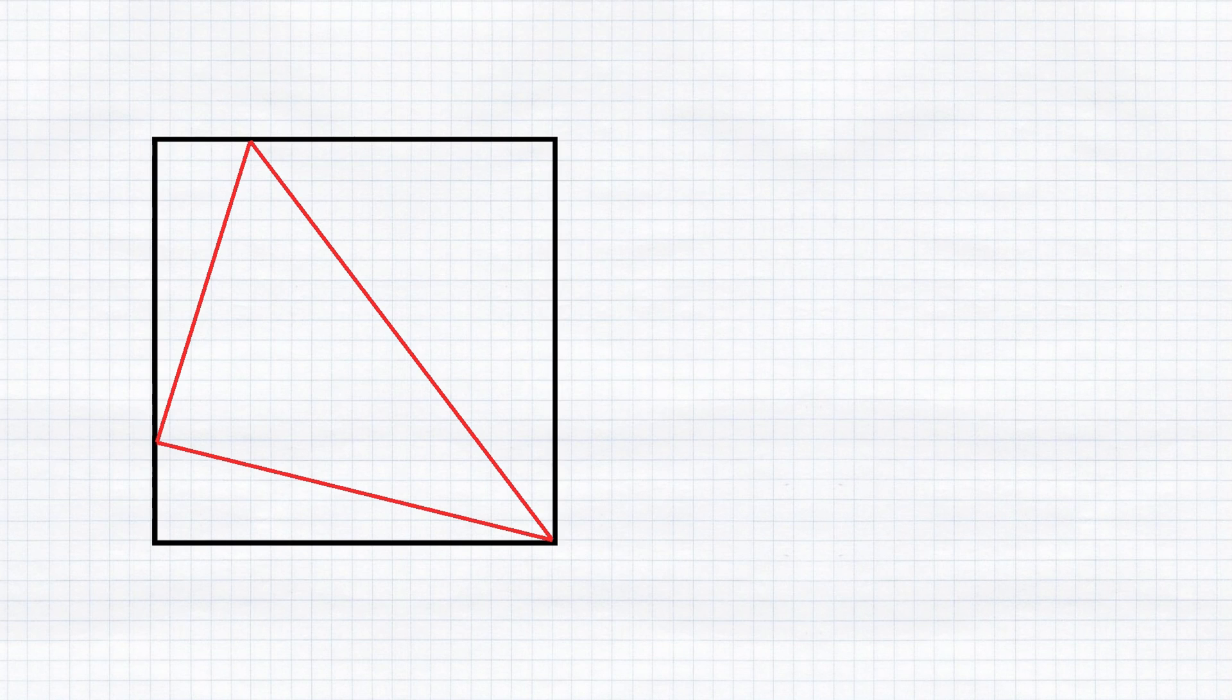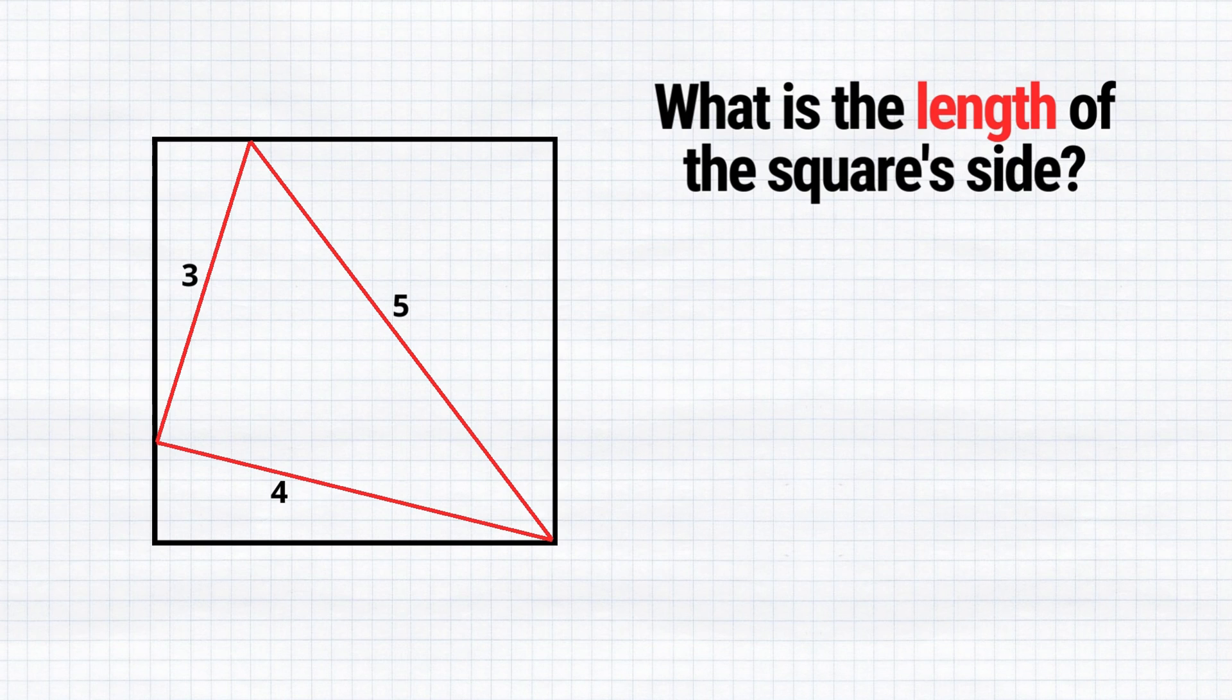Hello, my dear friend. Here is a square with a triangle inside it. The lengths of the sides are 3, 4, and 5. Our task is to figure out the length of the square side. Let's call it the value of B.